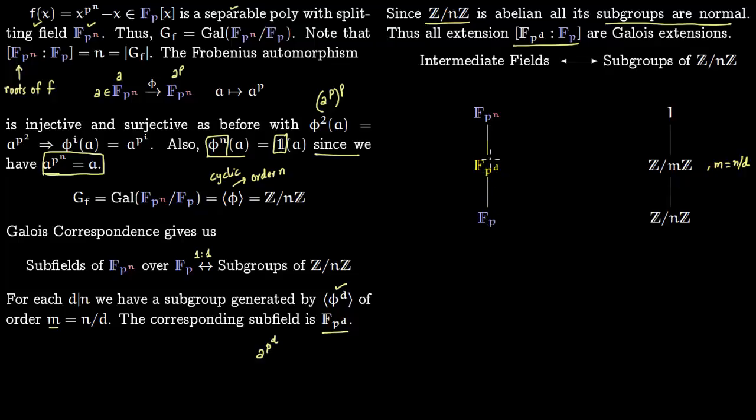We can also talk about F_(p^d) over F_p. For that you have to take the subgroup generated by phi, which is Z/nZ divided by the subgroup generated by phi^d. The corresponding extension is F_(p^d) over F_p.